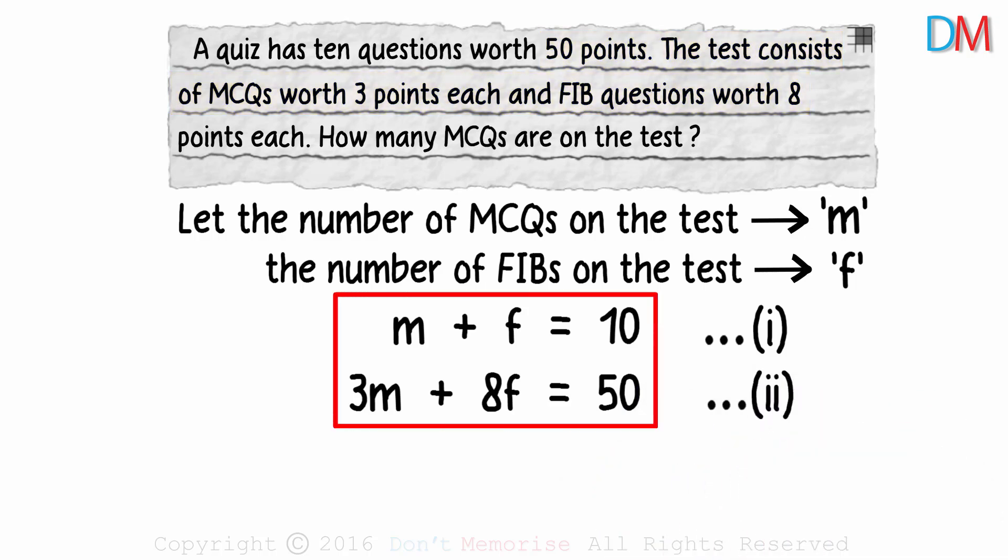These are the two linear equations we formed based on the data provided in the question. M plus F equals 10 and 3M plus 8F equals 50. How do we solve this? None of the coefficients are the same which means we cannot add or subtract directly. We need to modify the equations to make the coefficients of one of the variables same.